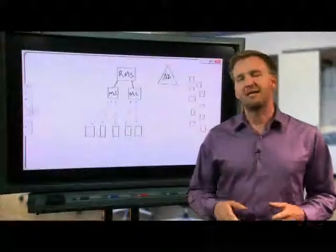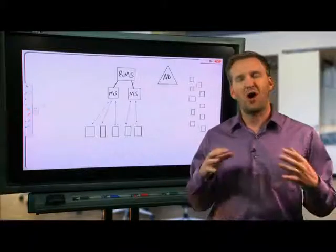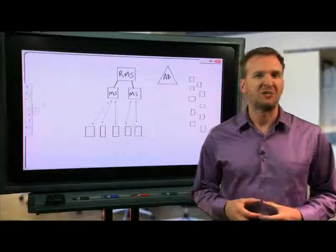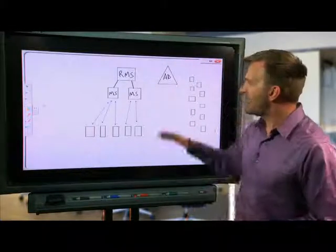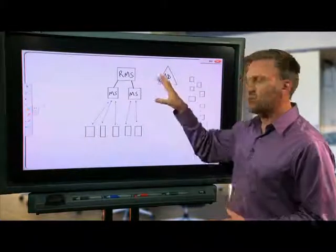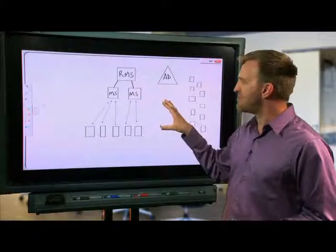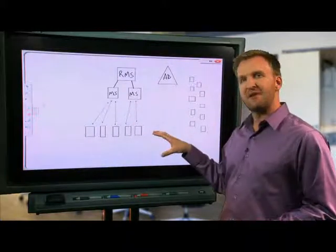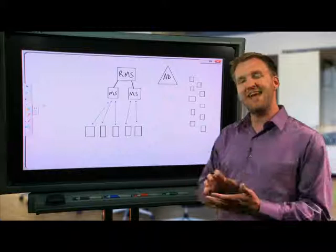So what I would like to do now is go to the whiteboard and draw out a little bit of what we're trying to accomplish here. As you can see, I've already drawn our management environment: the route management server, it's got two management servers, and these are various different agents which, remember, the agents are primarily servers.